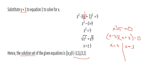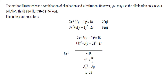The solution set represents the intersections of our two or more graphs — those are the points where they intersect. The method illustrated was a combination of elimination and substitution: in the first step, we eliminated x squared, and in the second step, we substituted the value of y. So what if we use pure elimination?